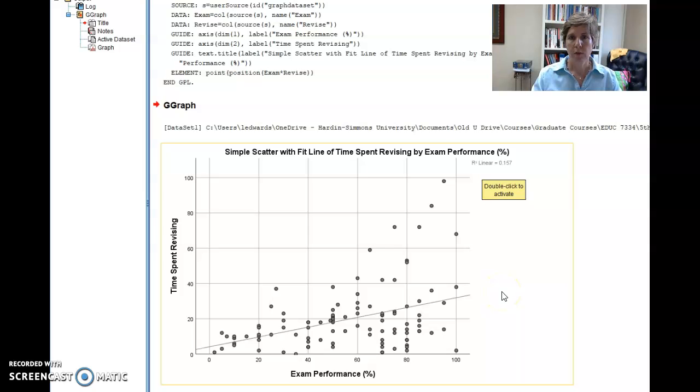Which implies that 85% of other variables influence, for instance, exam performance. All right, so time spent revising contributes a very small percent to exam performance.